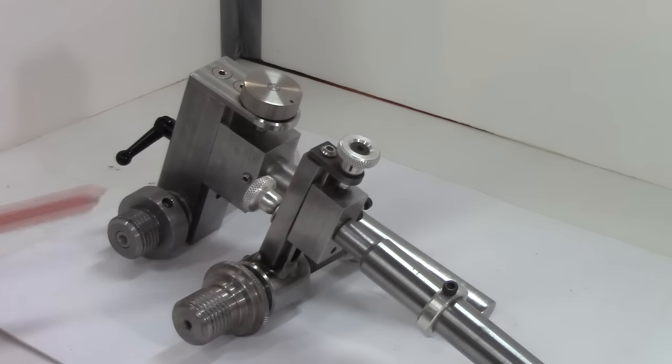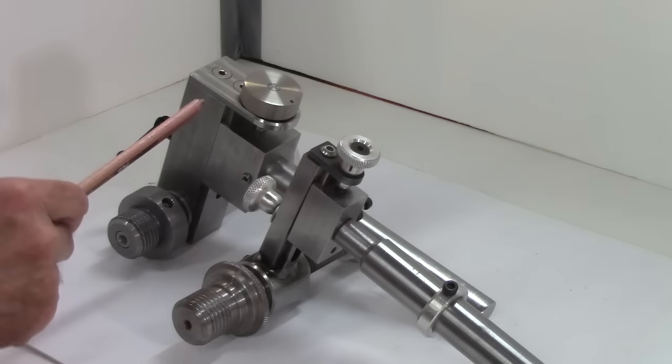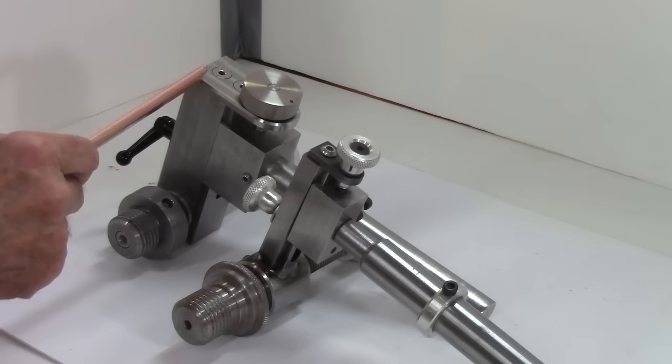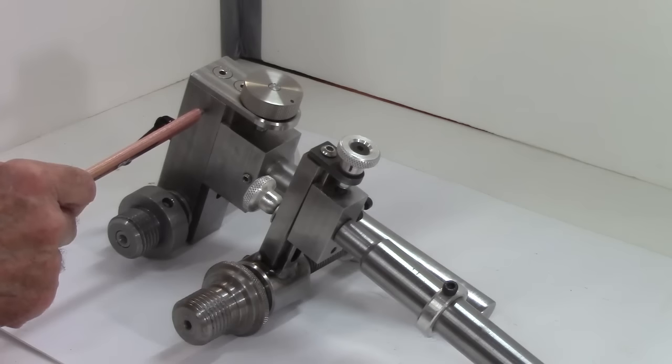The next item is the cross slide mechanism. Just comparing the two on size, this one is massive. Both of them are steel, but this is so much bigger—it'll just hold the lead screw better.